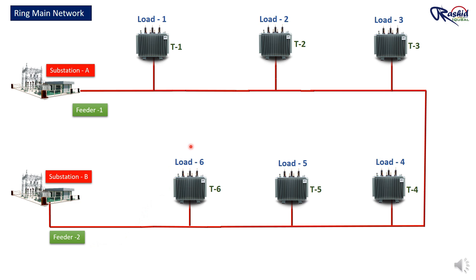But even this system is not perfect. The problem here is that there are no switches. If Feeder 1 has a problem, we can't disconnect the fault area because there are no switches to control it. Also, the transformer, which is very important and expensive, doesn't have any protection. So how do we make this system better?